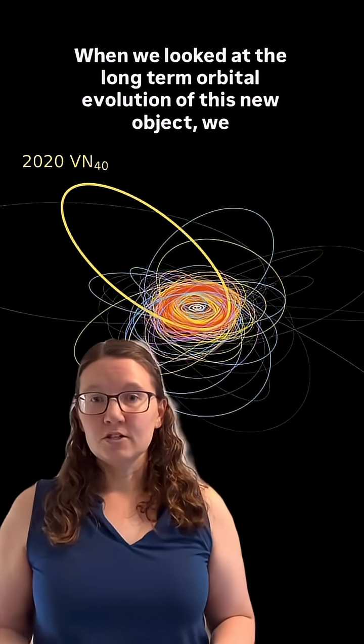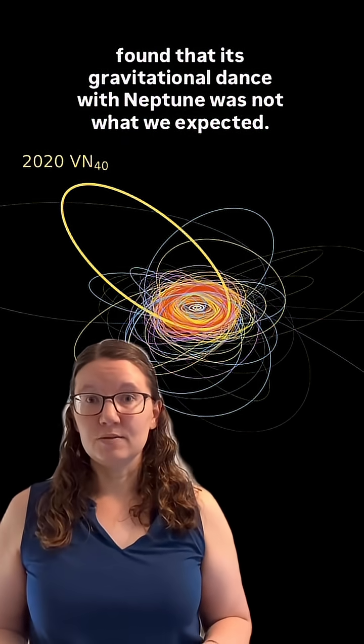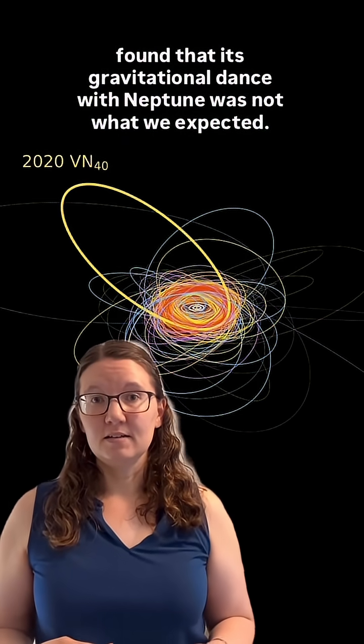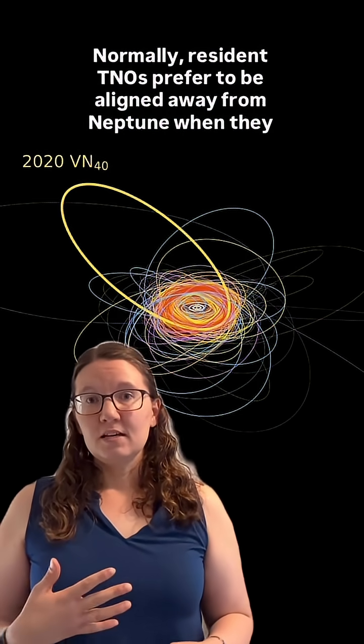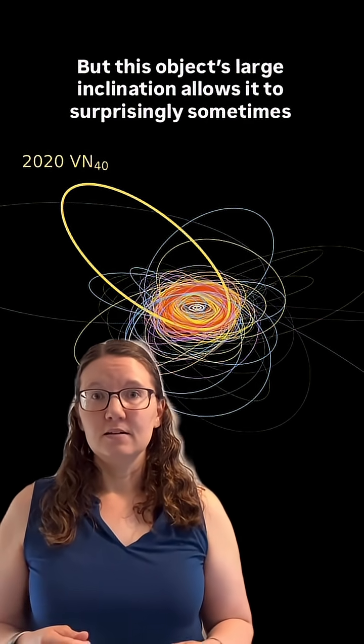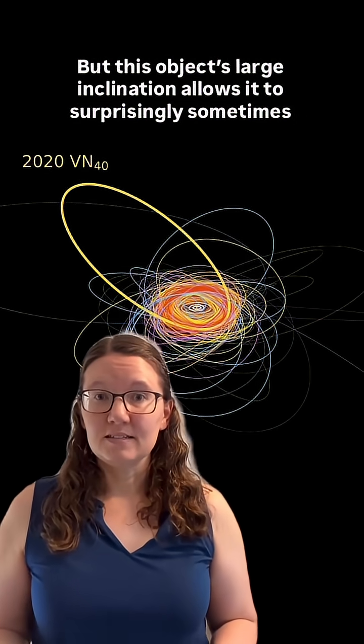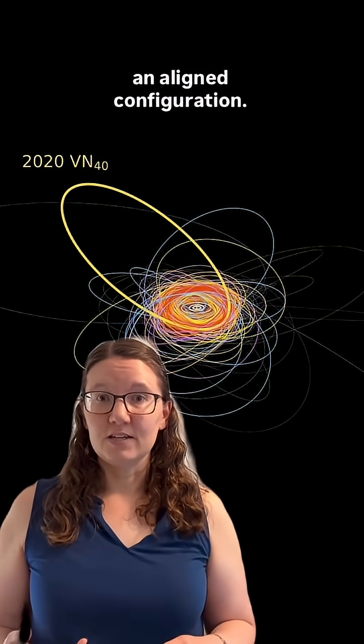When we looked at the long-term orbital evolution of this new object, we found that its gravitational dance with Neptune was not what we expected. Normally, resonant TNOs prefer to be aligned away from Neptune when they make their closest approach to the Sun. But this object's large inclination allows it to surprisingly sometimes prefer an aligned configuration.